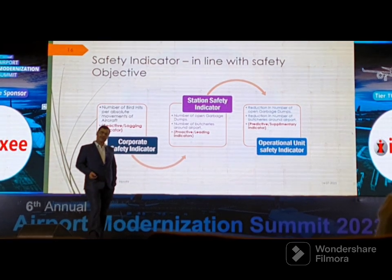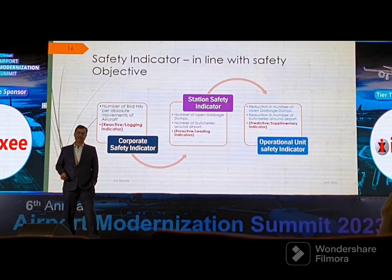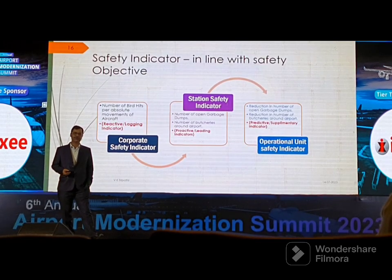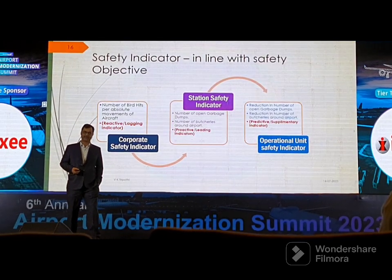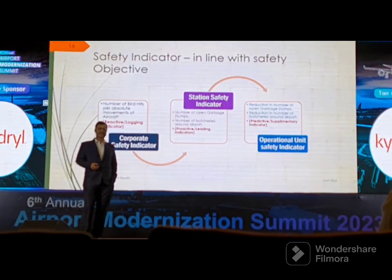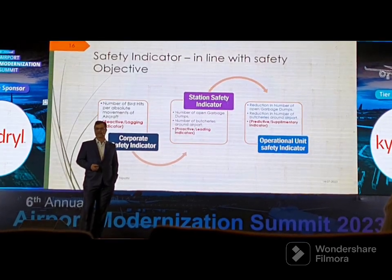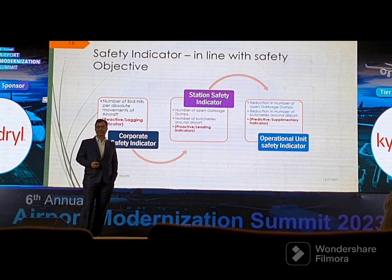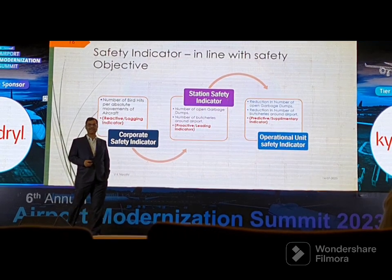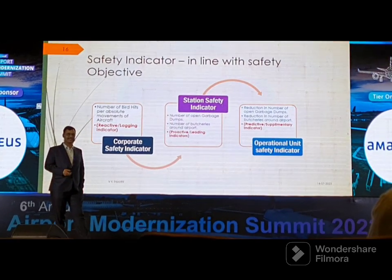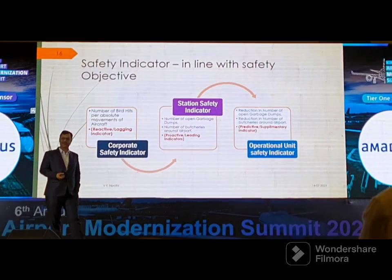Once you have decided your objectives, you need to determine how you will measure them — that is where indicators come in. Just like a speedometer acts as an indicator for speed, you specify certain safety indicators to measure whether your objectives are being met.